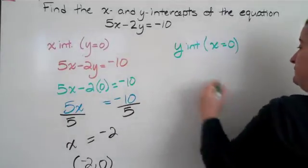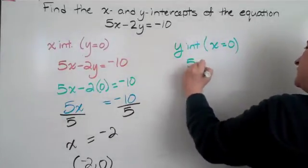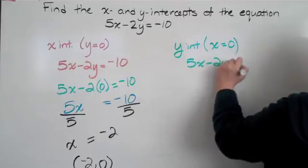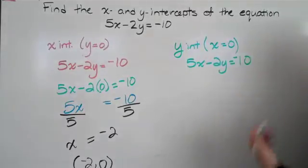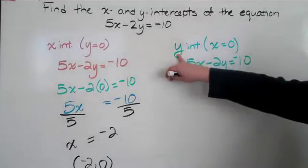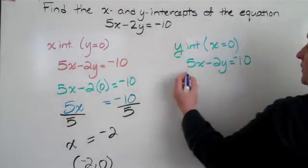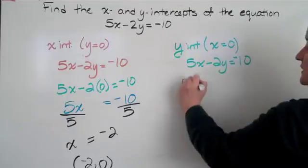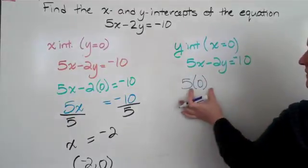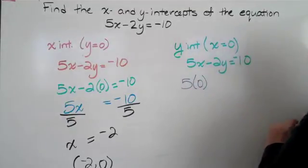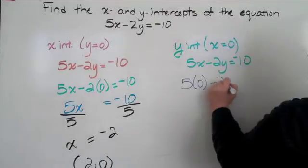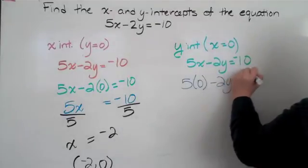Start with the same problem. 5x minus 2y equals negative 10. And in this case, since I'm looking for the y-intercept, I'm going to plug in a 0 for the x. And it's going to look like this. So I'm going to do 5. Instead of the x, I'm going to put the 0 in. Notice it's in parentheses. Whenever I substitute, I like to use parentheses. Minus 2y equals negative 10.